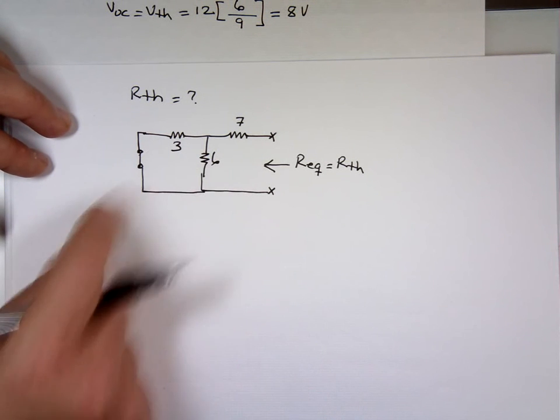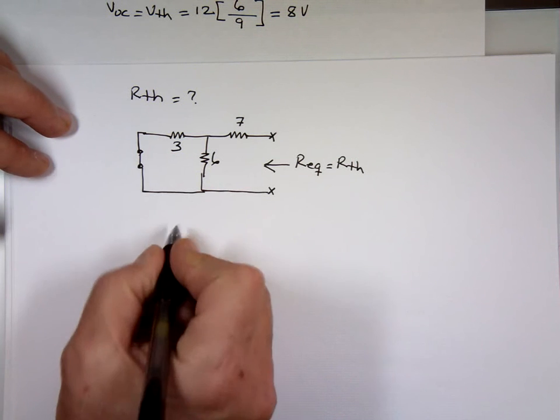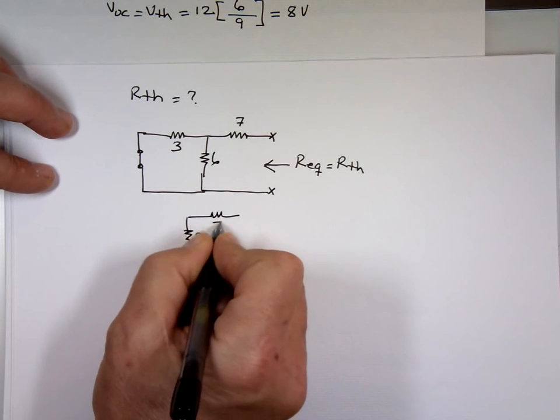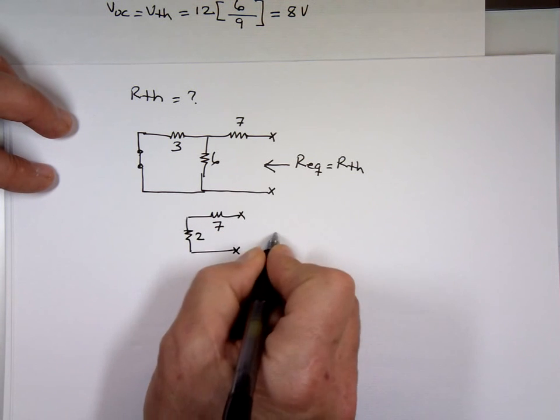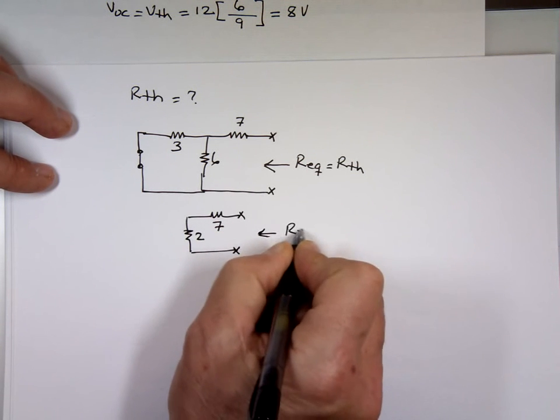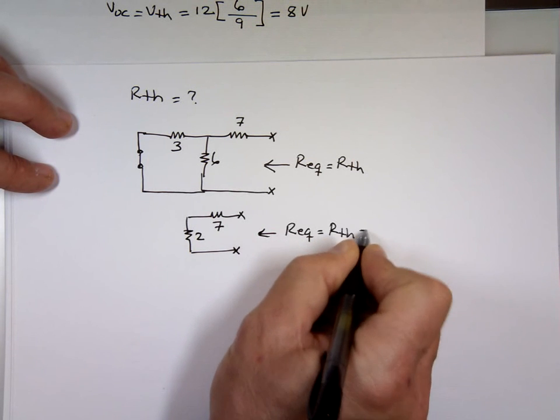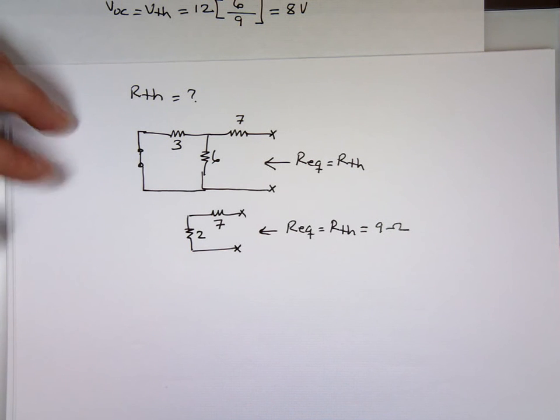Notice these two in parallel, the product over the sum: 6 times 3, 18 divided by 9, that's a 2, plus 7. So what is R-equivalent? 9 ohms.